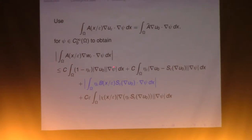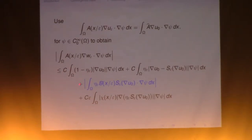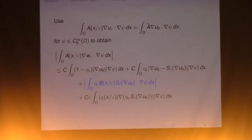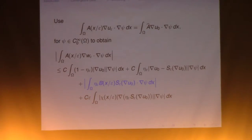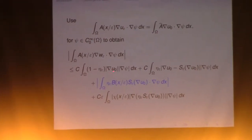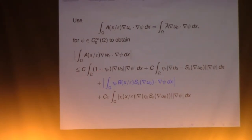The first two terms are going to have Y in place, or maybe square root of Y. Look at the first term: eta_Y is supported in omega and vanishes near the boundary. So in the interior, away from the boundary by four times Y, one minus eta_Y is zero. So this integral only takes place in the boundary layer of omega. With a boundary layer estimate, you can gain a factor of Y, but the price you pay is going to the second derivative of U0.